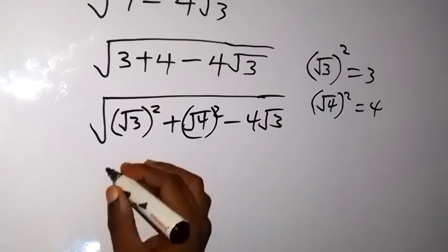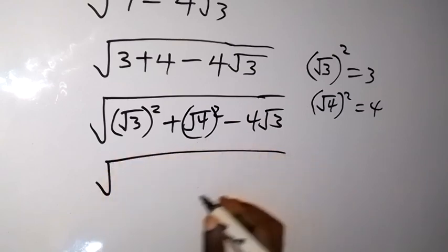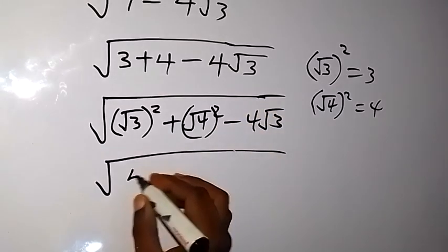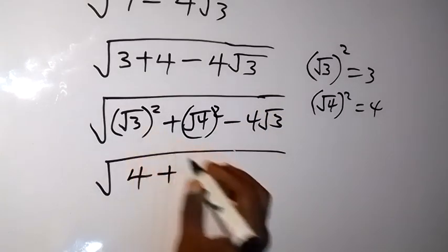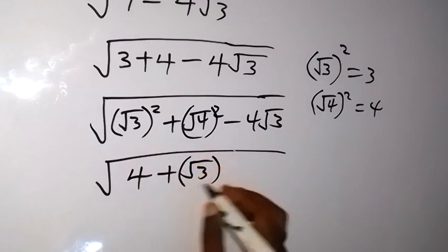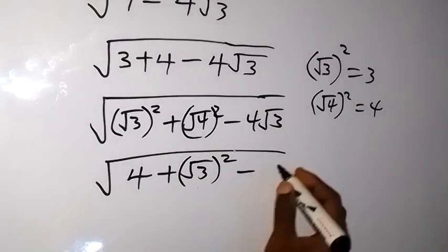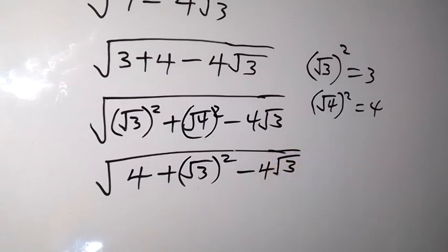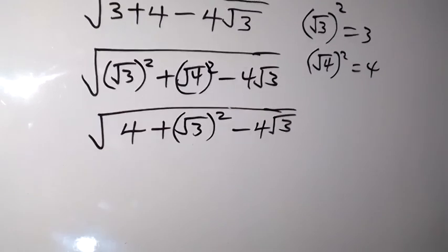When I rearrange it, I can say here we have 2 squared which is 4. I can say 4 plus then root 3 squared, then minus 4 root 3.